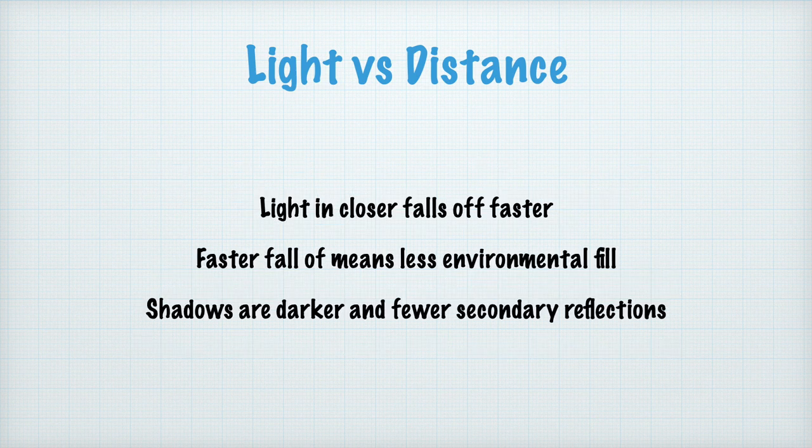Light in closer falls off faster. Faster fall off means less environmental fill, shadows are darker, and fewer secondary reflections show up.